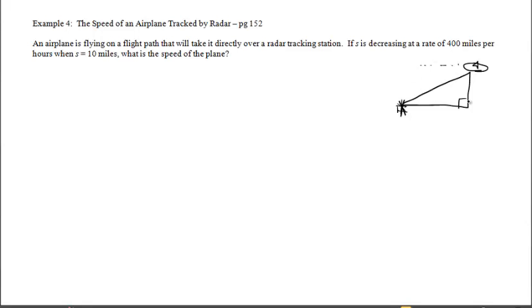Just the way I've drawn this to correspond with the textbook, the airplane is traveling back this way to the left. We have an airplane flying on a flight path that will take it directly over a radar tracking station. So here is our radar tracking station right here, and the airplane is flying this way and will eventually be straight up above that radar tracking station.